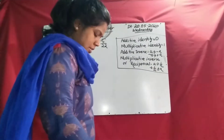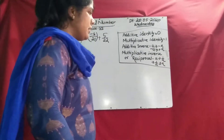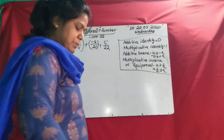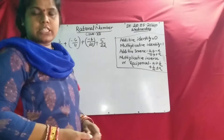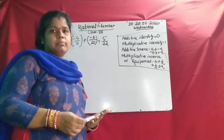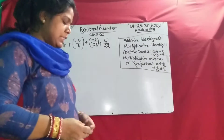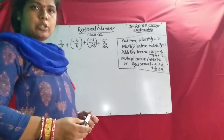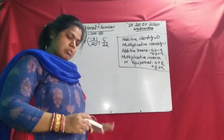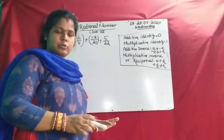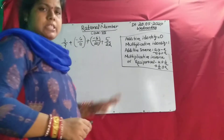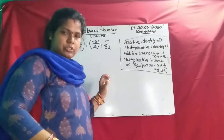Good morning students. Today's class, we read about the rest of the rational numbers. In previous classes, we have already discussed about the different properties of whole numbers, integers, and rational numbers. These properties are closure property, commutative property, and associative property. I hope you understood that. Today we solve some examples given in your book.